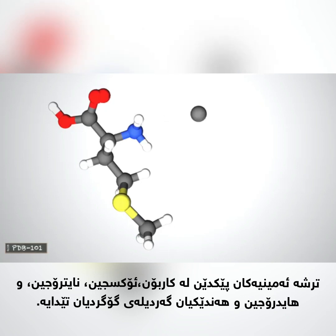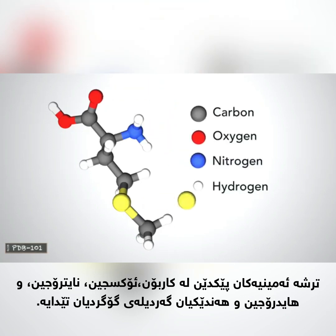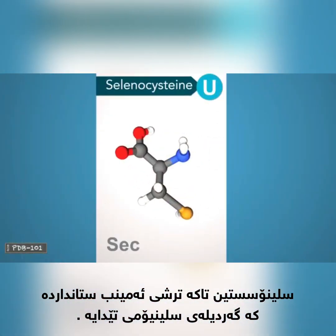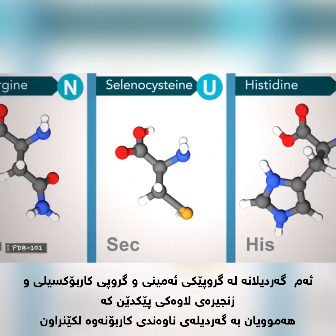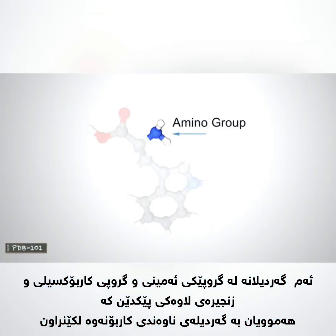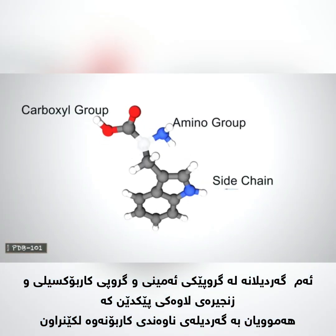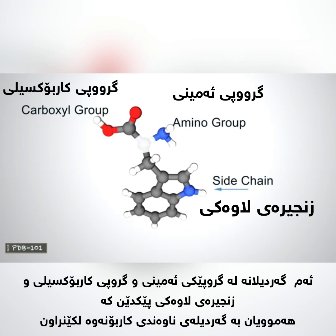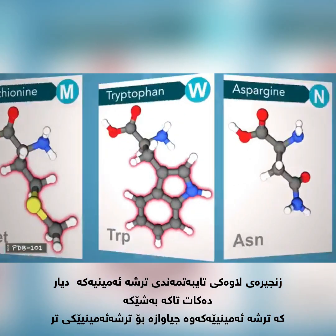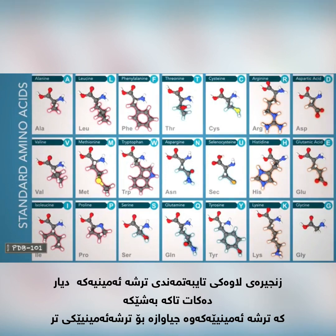Amino acids are made of carbon, oxygen, nitrogen, and hydrogen atoms, and some contain sulfur atoms. Selenocysteine is the only standard amino acid that contains a selenium atom. These atoms form an amino group, a carboxyl group, and a side chain, all attached to a central carbon atom. The side chain determines an amino acid's properties and is the only part that varies from amino acid to amino acid.